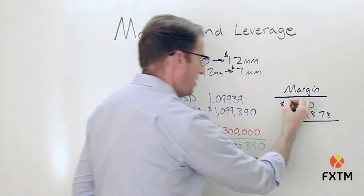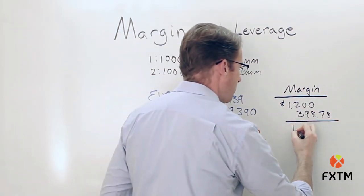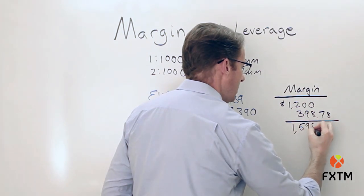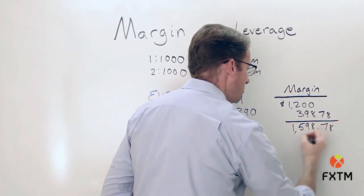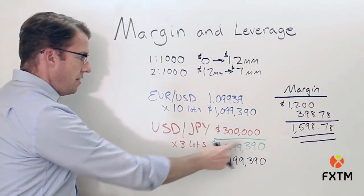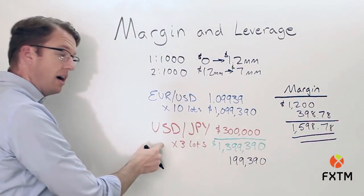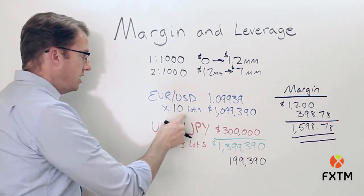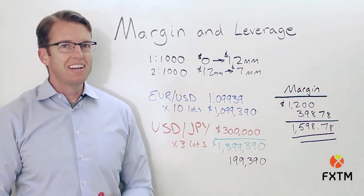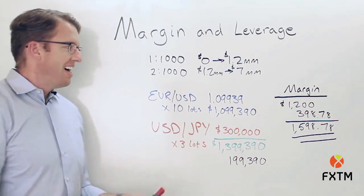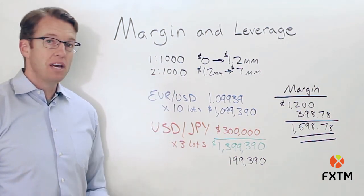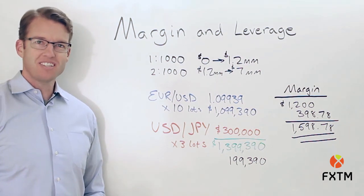Adding those up, we get $1,598.78 as the total margin requirement to hold open this position consisting of three lots of the dollar-yen and 10 lots of the euro US dollar. It's a little bit more complicated, but it should help you understand how margin and leverage relate to each other, and how the margin requirement may change depending on the size of your position.